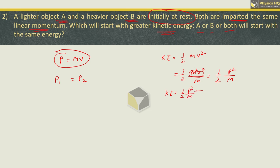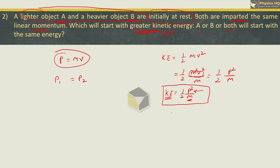Since momentum is the same in both cases, kinetic energy is inversely proportional to mass. So the object with less mass has more kinetic energy. Object A is lighter, so mass of A is less than mass of B, therefore kinetic energy of A will be more than kinetic energy of object B.